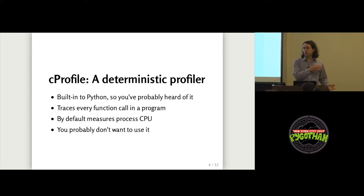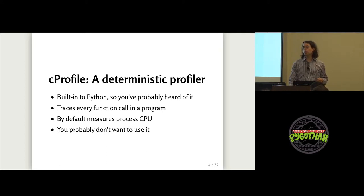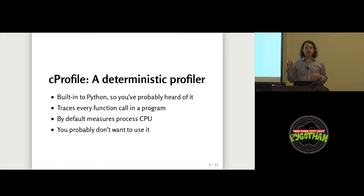The way CProfile works is it traces every function in your program, and that can have some problems which I'll get into. The thing it measures by default is process CPU — how much computation time your process used. Whenever you're choosing tools to measure performance, it's very important to figure out what they're measuring, because different measures expose different kinds of performance problems. If you're measuring CPU and computation, you will not see slowness that involves waiting for the network or waiting for the disk.